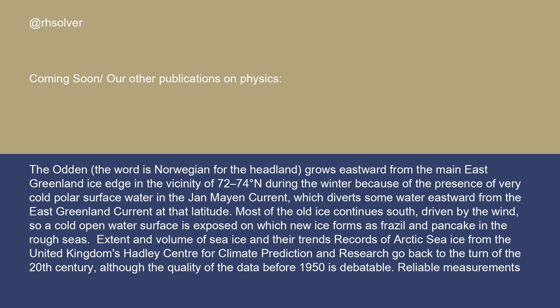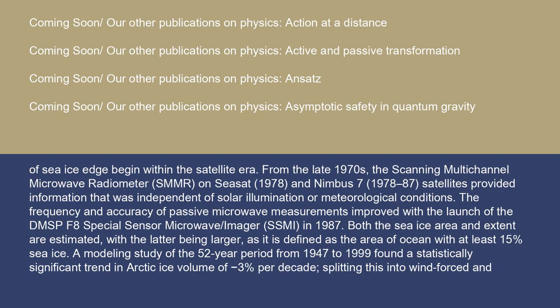Records of Arctic sea ice from the United Kingdom's Hadley Center for Climate Prediction and Research go back to the turn of the 20th century, although the quality of the data before 1950 is debatable. Reliable measurements of sea ice edge begin within the satellite era from the late 1970s. The scanning multi-channel microwave radiometer (SMMR) on SEASAT (1978) and Nimbus 7 (1978 to 1987) provided information independent of solar illumination or meteorological conditions. The frequency and accuracy of passive microwave measurements improved with the launch of the DMSP F8 Special Sensor Microwave/Imager (SSM/I) in 1987.